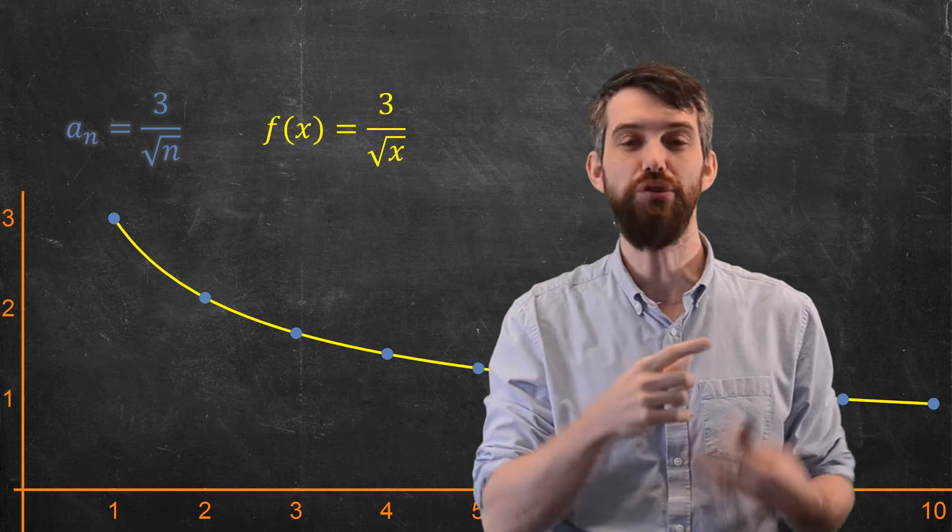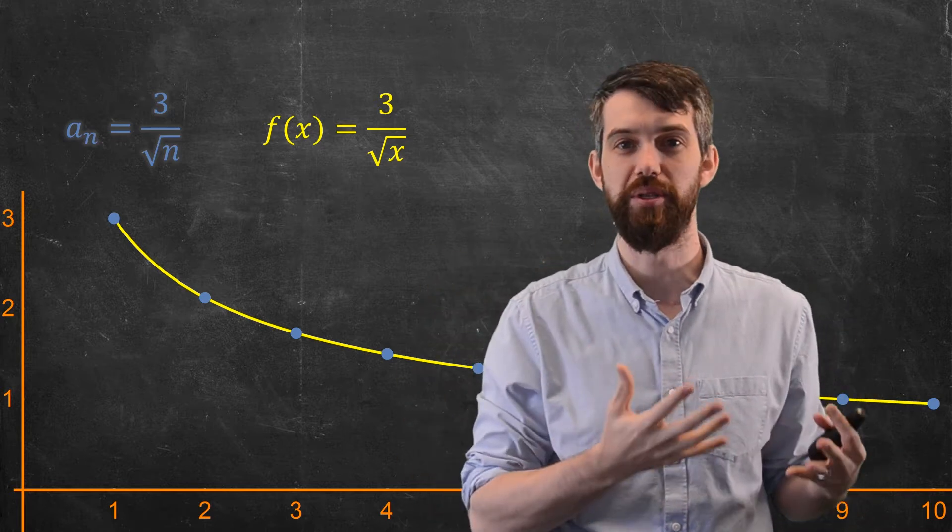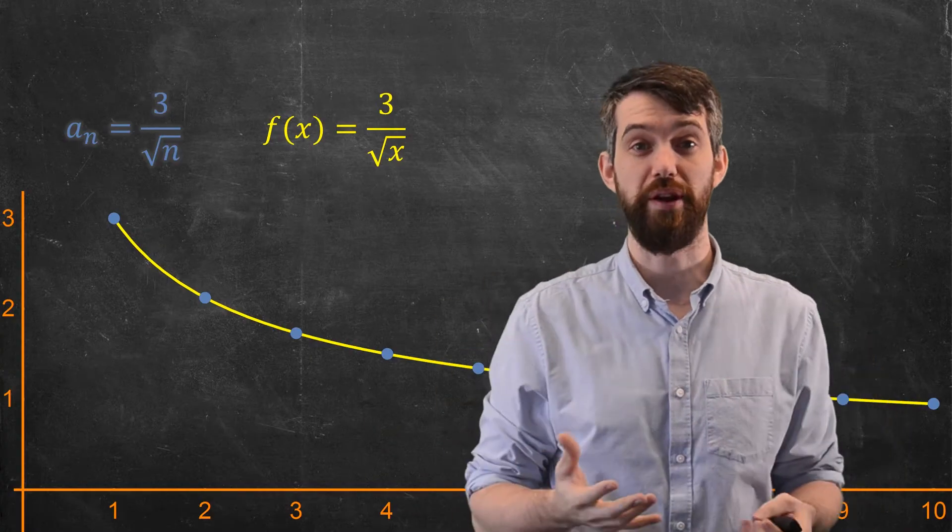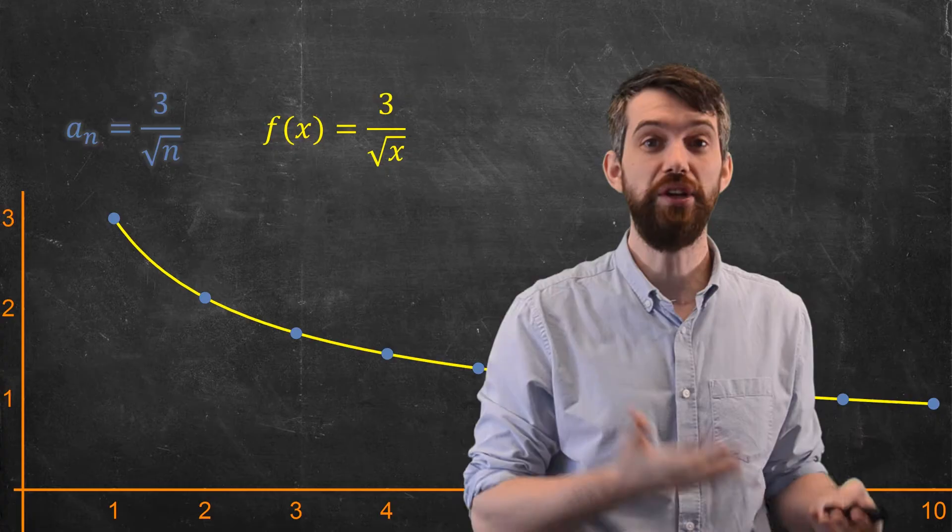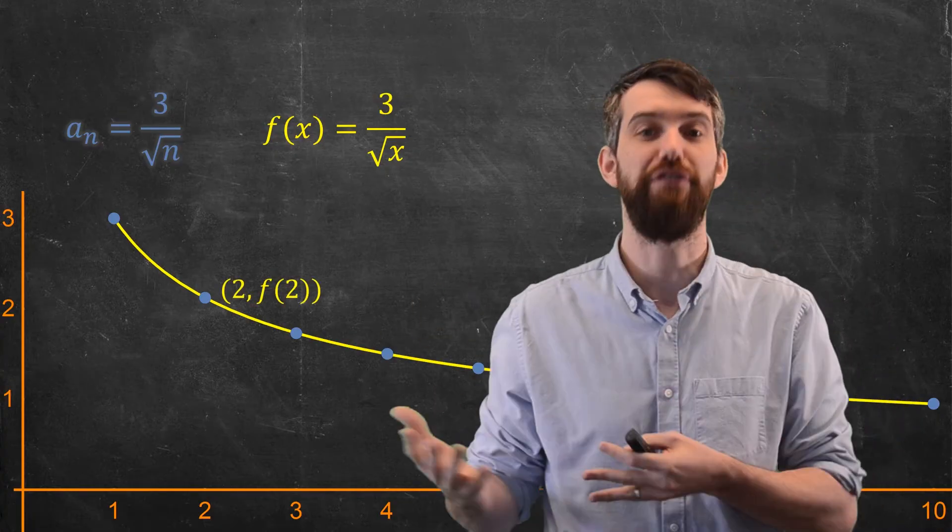But for a sequence, you just restrict the domain to only allow the natural numbers as inputs. Indeed, when we were talking about calculus of functions of real variables, we would look at a point on a curve and give a coordinate something like (2, f(2)).